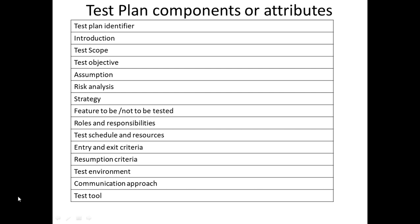The next is strategy. Under strategy, they define the different levels of testing in scope — for example, what kind of testing such as functional or non-functional testing will be done, which method you are going to use, how many test cases you are going to execute, and whether performance or security testing is included. It also covers what process or environment you are going to use, and whether test data will be provided or you need to generate it.